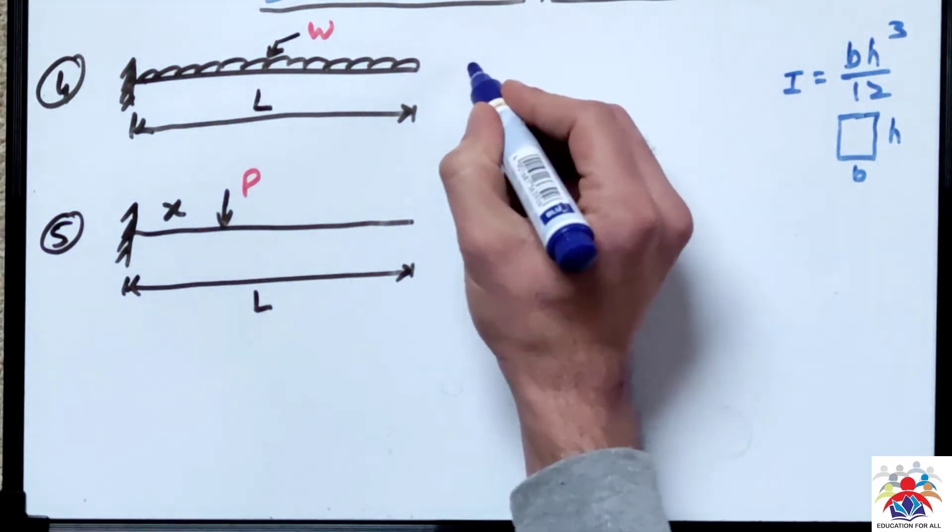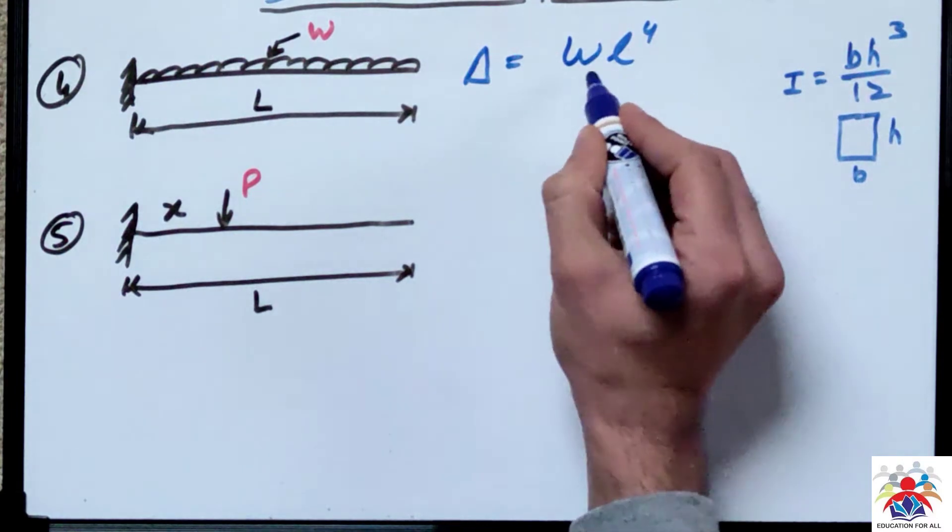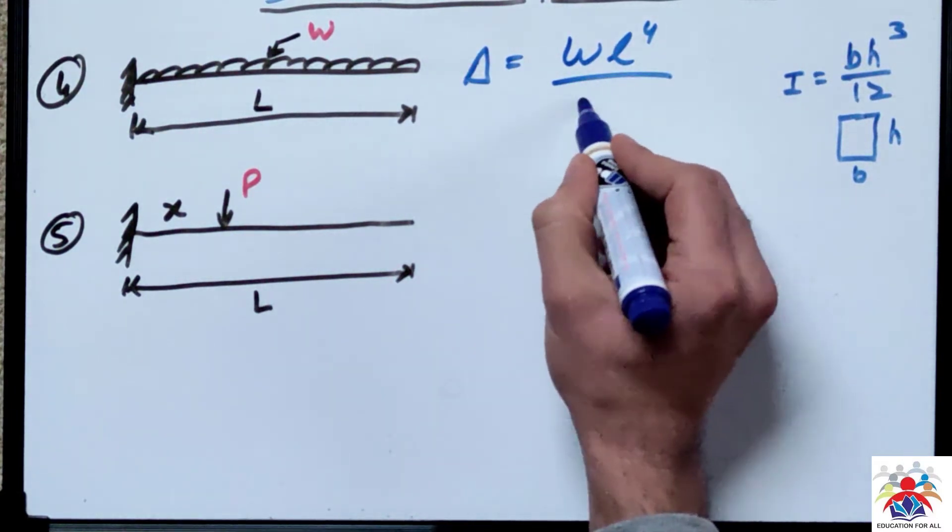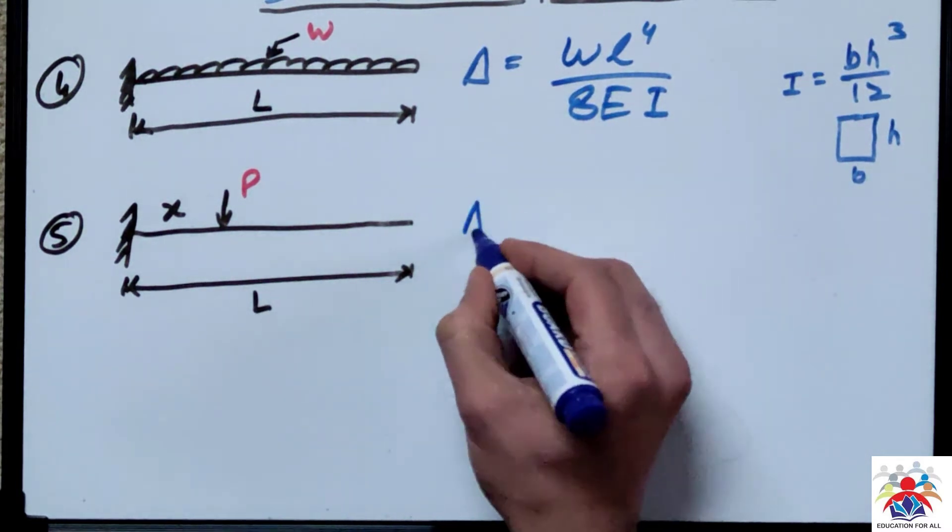Our deflection formula for this beam would be W L to the fourth over 8 E I. And the deflection formula for our last beam, this is a little bit complicated I would say, the lengthy formula.